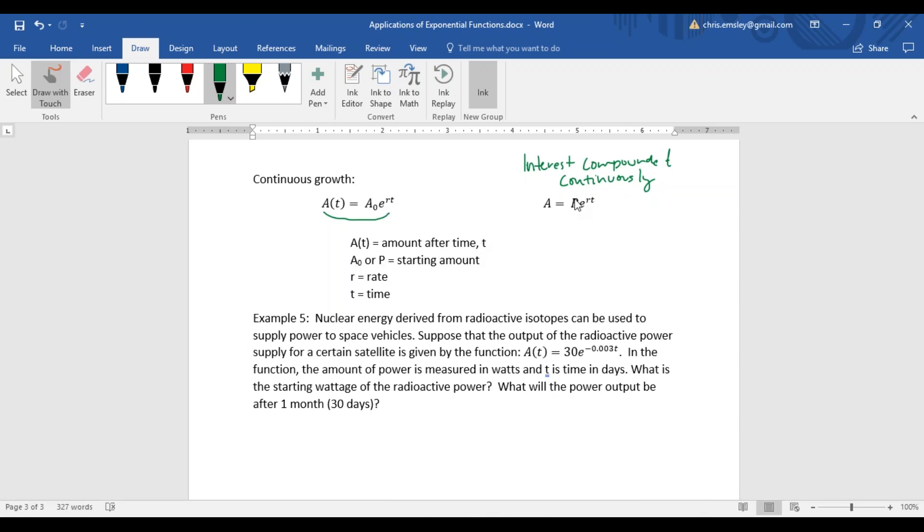A sub zero, or P if we're looking at the financial version, is your starting amount principle. R is the rate, and t is the time.